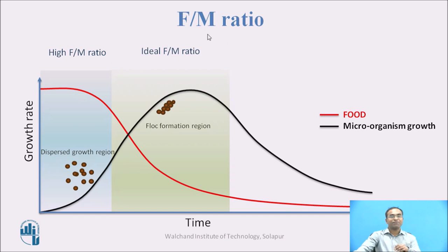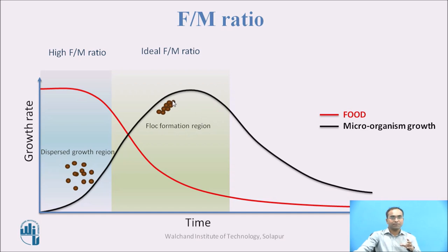In the ideal F by M ratio, microorganisms are at a very high rate relative to food. The food is at minimum and microorganisms are relatively higher — they will consume all the food, decrease the food supply, and increase themselves in the aeration tank, leading to large quantity floc formation. This is our ideal condition. Since it is a continuous process, food is continuously coming in and being consumed, and this is what we want — maintaining food at a lower level and microorganisms at a higher level for activated microorganisms to increase.